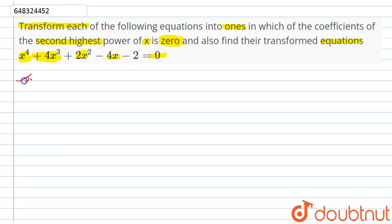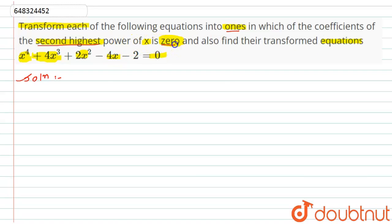For this, let us see the solution. We have been given an equation and we have to transform this equation into one in which the coefficient of the second highest power of x should be 0, while we also have to find that transformed equation.